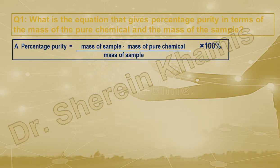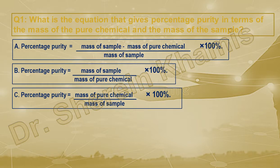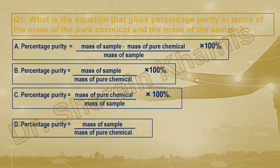Question number one: What is the equation that gives the percentage purity in terms of the mass of the pure chemical and the mass of the sample? We have four choices: (A) percentage purity = (mass of sample − mass of pure chemical) / mass of sample × 100; (B) percentage = mass of sample / mass of pure chemical × 100; (C) percentage purity = mass of pure chemical / mass of sample × 100; (D) mass purity = mass of sample / mass of pure chemical.